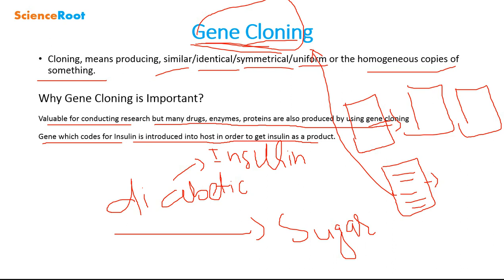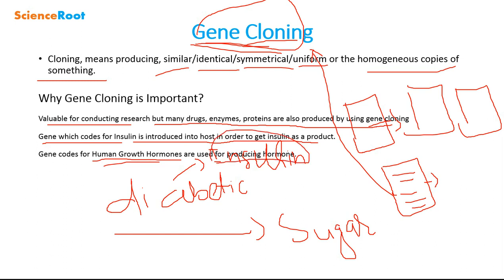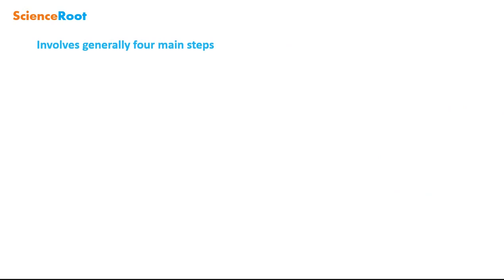Similarly, many other genes are used to get products from them. Another example is the human growth hormone, which is also produced using gene cloning. The gene coding for the human growth hormone is used for producing the hormone. Many drugs, enzymes, and proteins available in the market are produced by gene cloning.